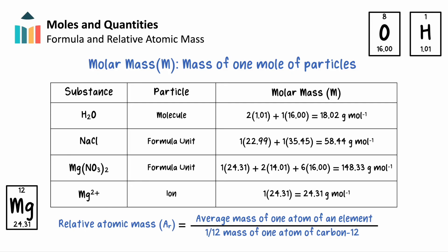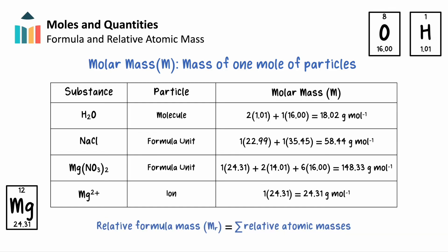Here, the mass units will cancel, making the relative atomic mass a unitless value. The definition of relative formula mass is simply the sum of all the relative atomic masses of elements contained in the compound. This is also unitless.